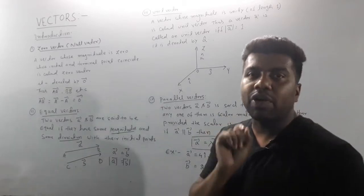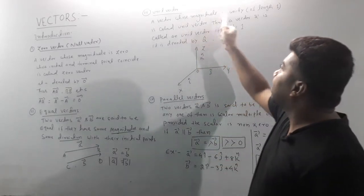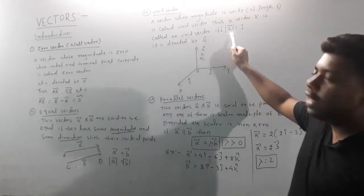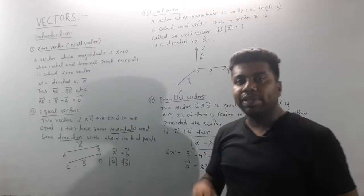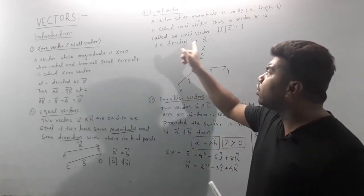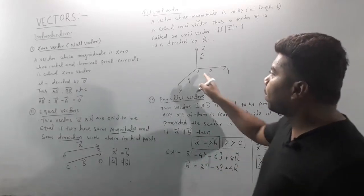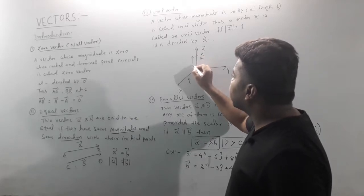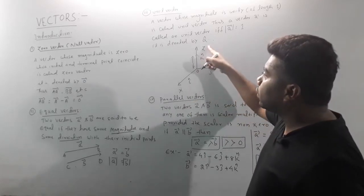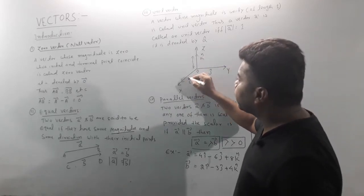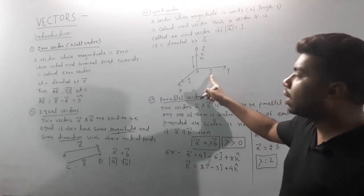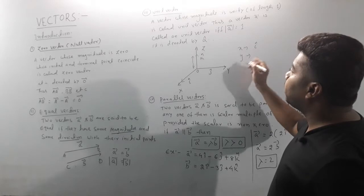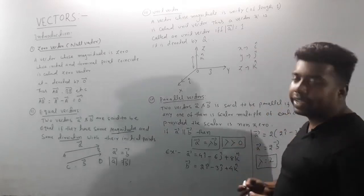Next is the unit vector. A vector whose magnitude is 1 is called a unit vector. A vector is called a unit vector if and only if its mod is equal to 1. It is denoted by a cap notation. On the x-axis, the unit vector is i-cap; on the y-axis, it is j-cap with length 1; on the z-axis, it is k-cap.